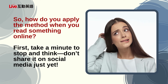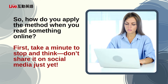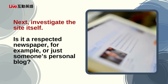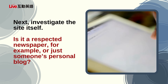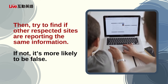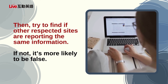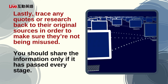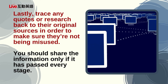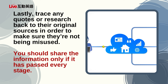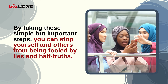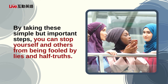So how do you apply the method when you read something online? First, take a minute to stop and think. Don't share it on social media just yet. Next, investigate the site itself — is it a respected newspaper, for example, or just someone's personal blog? Then try to find if other respected sites are reporting the same information; if not, it's more likely to be false. Lastly, trace any quotes or research back to their original sources in order to make sure they're not being misused. You should share the information only if it has passed every stage. By taking these simple but important steps, you can stop yourself and others from being fooled by lies and half-truths.